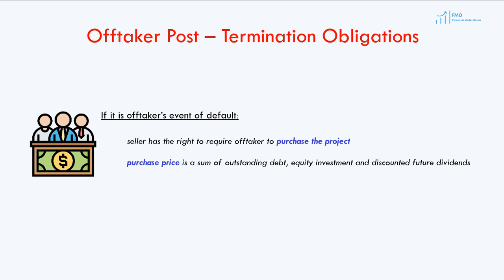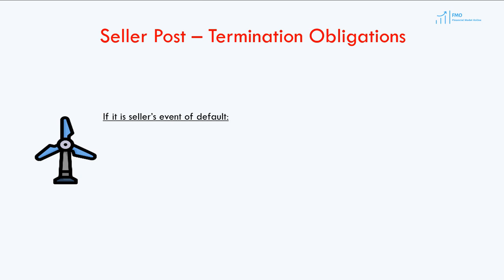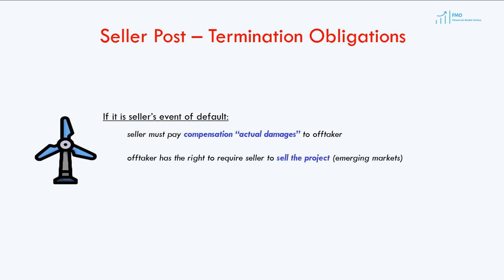The purchase price consists of the outstanding debt, equity investments made into the project, and discounted future dividends from the project. If the off-taker terminates the PPA due to the energy seller's breach, the energy seller has to compensate for losses that the off-taker has or will incur as a result of the PPA termination. Often, the off-taker also has an option to purchase the project, especially in emerging markets.